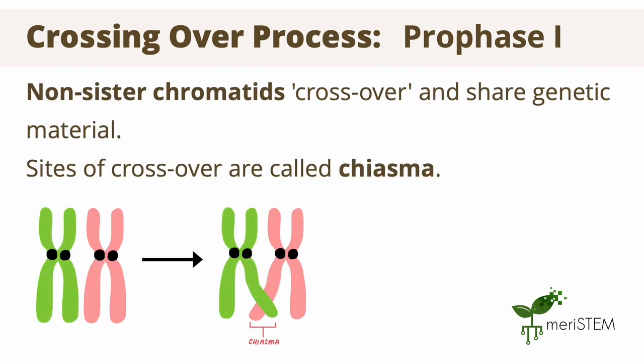Next, the non-sister chromatids cross over or overlap. The genetic material from these sites are cleaved from their original chromosome and inserted into a new location on the homologous chromosome. The sites where the two chromatids cross over are called the chiasma.